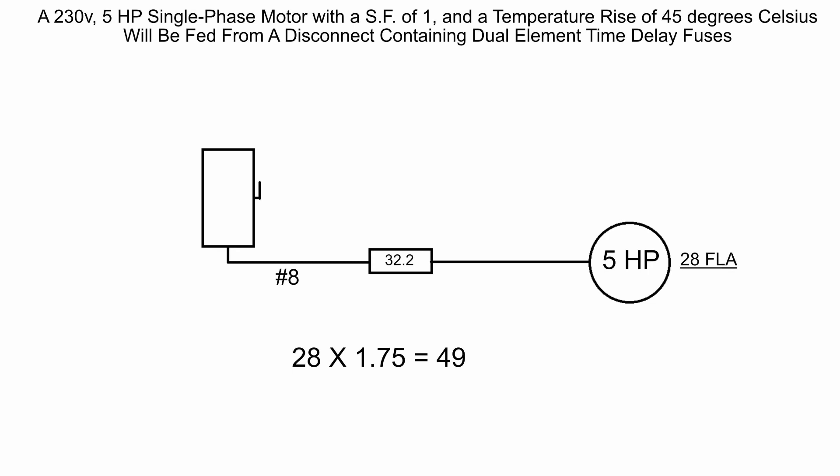Since this is a branch circuit on a motor and not a feeder supplying or an overcurrent device protecting multiple motors, we can go up to the next standard size for simply one single motor and that will take us up to 50 amps for the overcurrent protective device. That is how you size a motor, its branch circuit, its thermal overloads, and its overcurrent protective device.